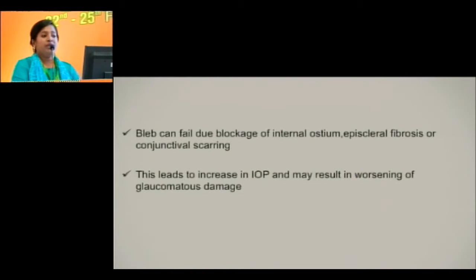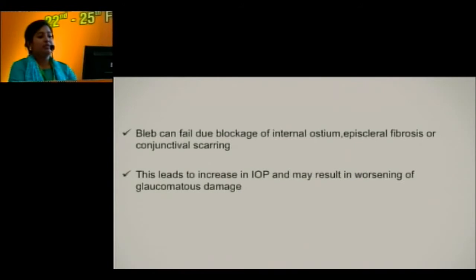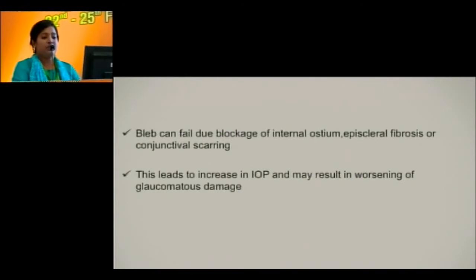A bleb can fail due to blockage of internal ostium, episcleral fibrosis, or conjunctival scarring. This leads to increase in IOP and may result in worsening of glaucomatous damage.